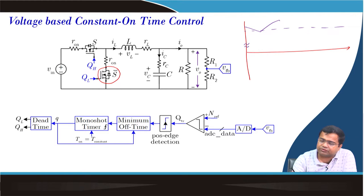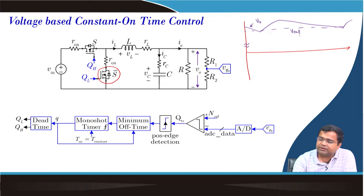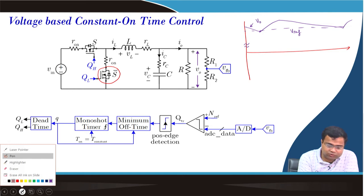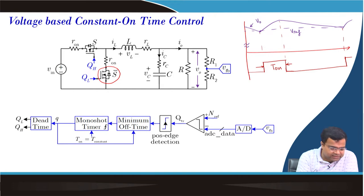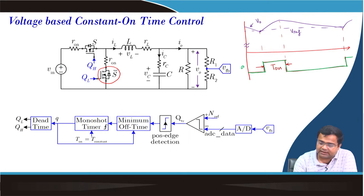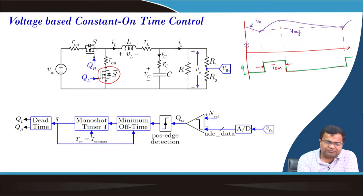Whenever the output voltage falls below the reference voltage, it triggers this constant on-time. That means, whenever V_out and V_ref intersect, the modulator is turned on for a fixed duration which is our constant on-time T_on, and then it gets triggered again. This pulse is the gate signal Q, and then you can put a dead time, but since we are turning off the body diode on the low side phase, you can just pass this signal to the high side switch.